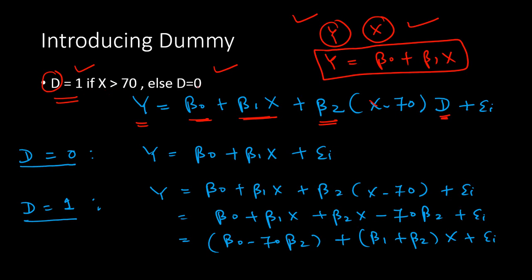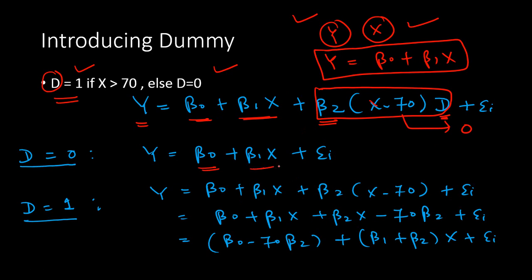There will be two equations. When the dummy d = 0, the second part of the equation becomes zero, so we are left with just the first part: y = β₀ + β₁x. This is nothing but what we already had in the first equation — the standard simple linear regression.